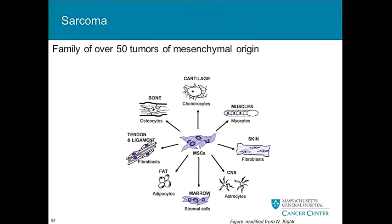Recognizing that many of you aren't clinicians, and even for those who are, you probably don't see sarcomas too often. I'll spend a couple slides giving background on how we think of these diseases. Sarcomas are actually a family of over 50 different tumors of mesenchymal origin — connective tissue — so bone, cartilage, fat, muscle. When these turn into cancers, they're called sarcomas.